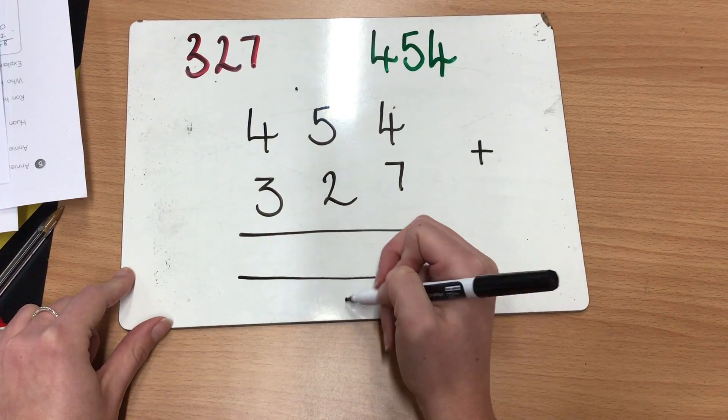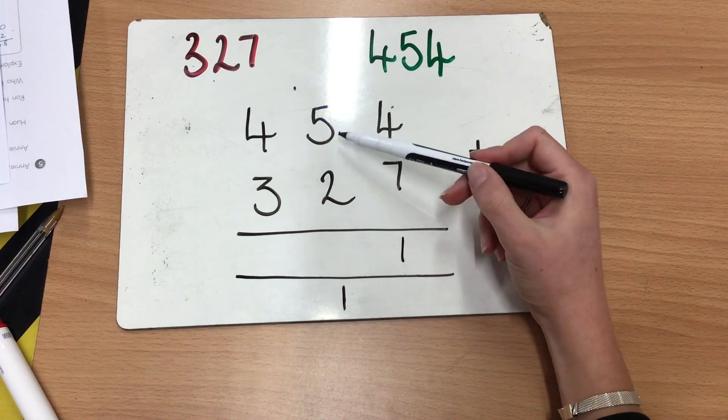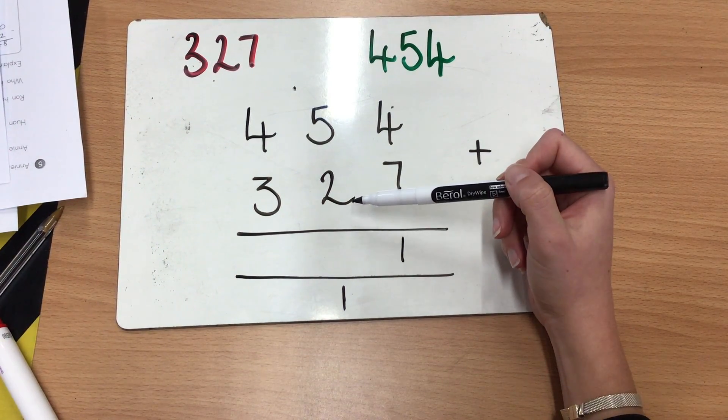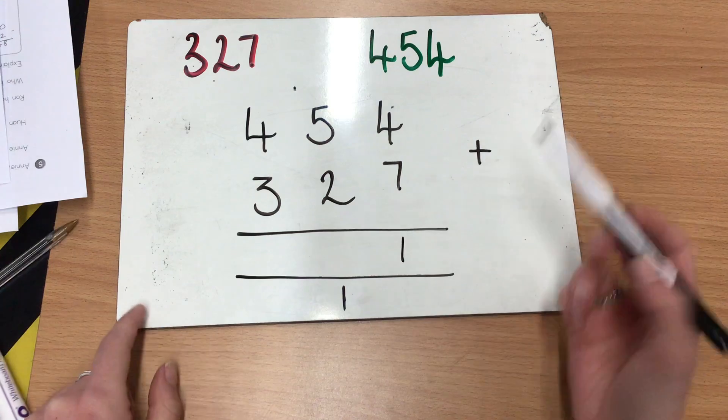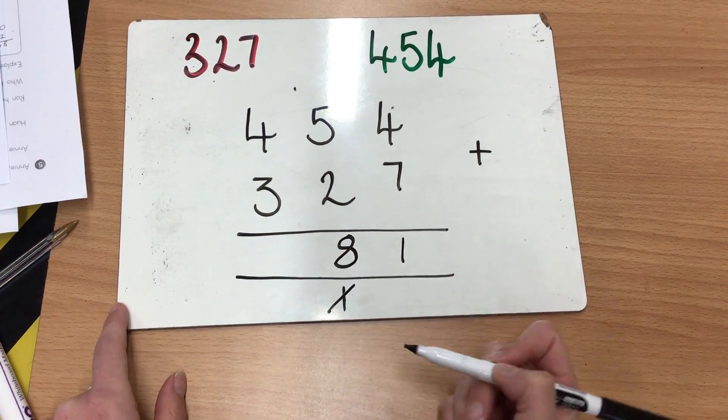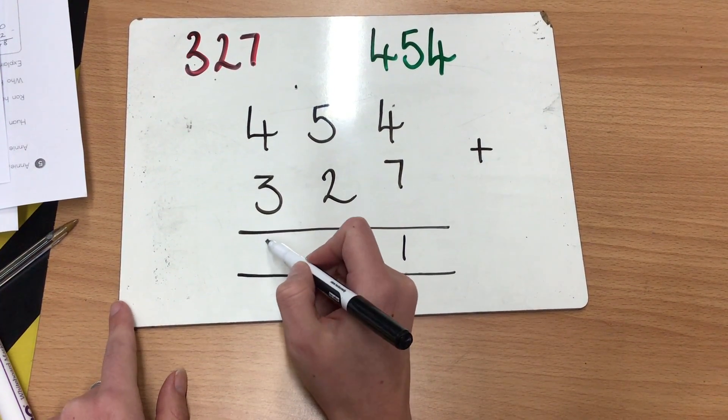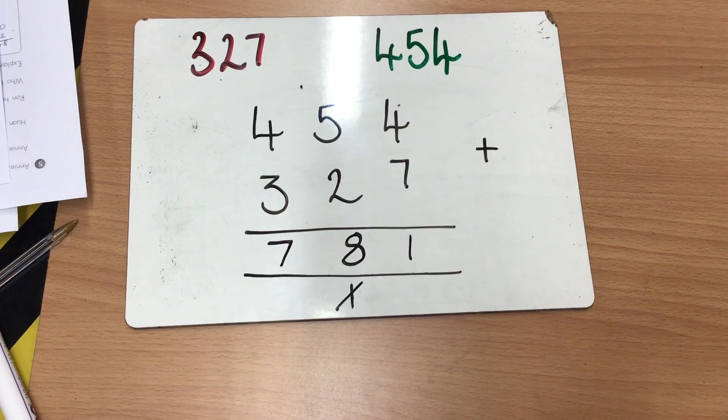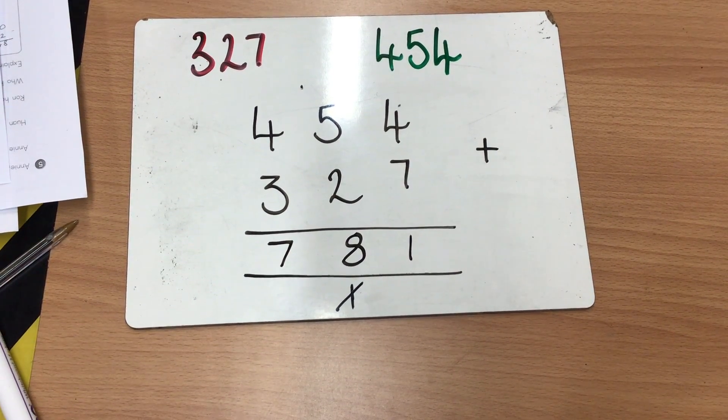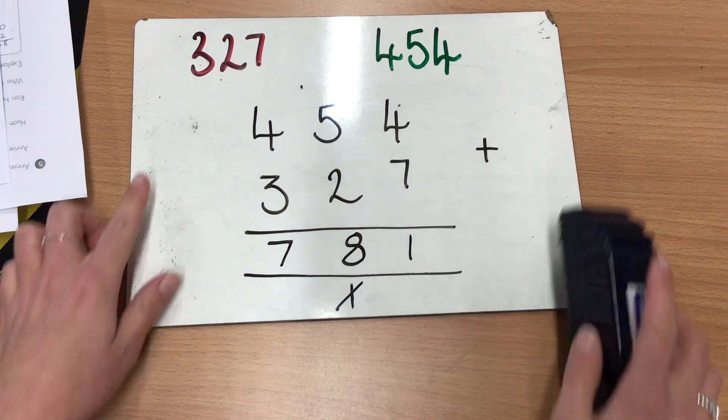4 add 7 would give us 11. Remember, we need to take that 1 over to the tens column because we've got 1 tens now. Now, 5 add 2 would give us 7. Add the 1 would be 8. So 50 add 20, add 10 is 80. And then 4 add 3 would give us 7. So that would be the second part of that answer, and how many apples they had in total would be 781.